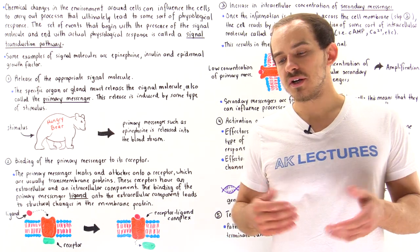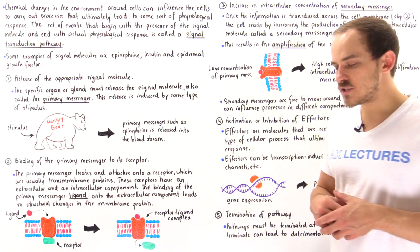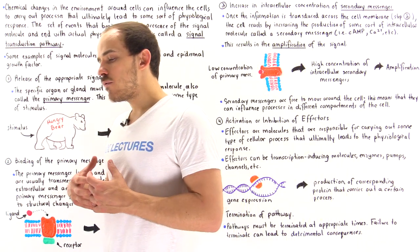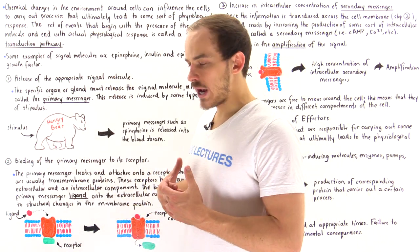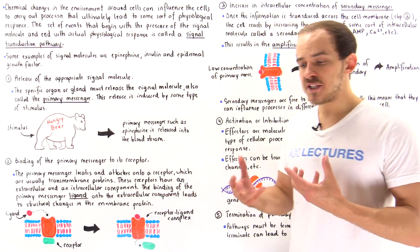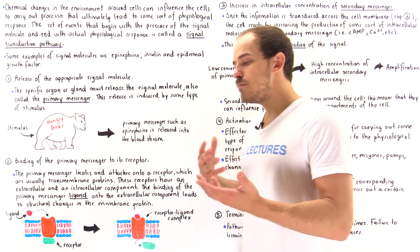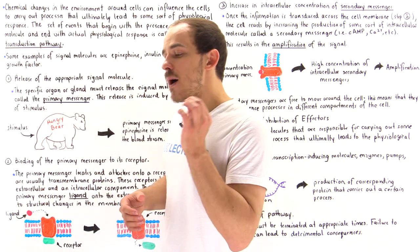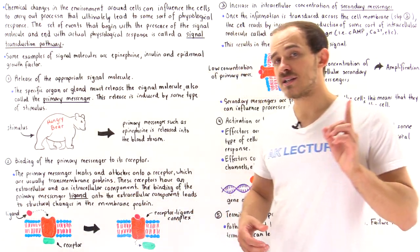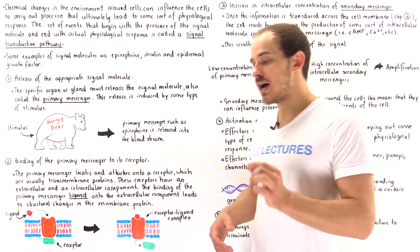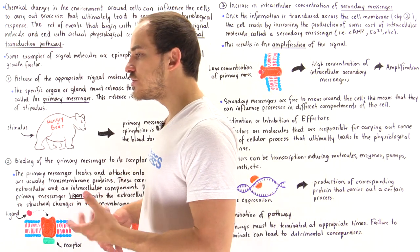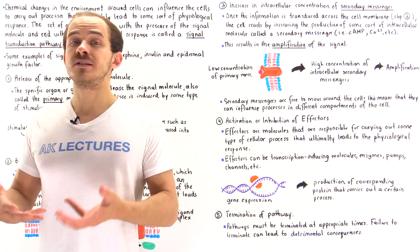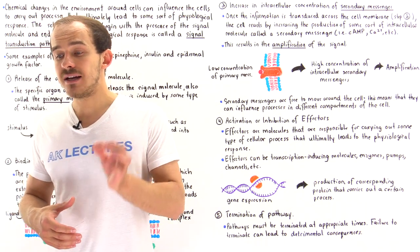Humans are what we call eukaryotic organisms, which means we consist of many many individual cells. For the human to function correctly, the individual cells must be able to work together and communicate with one another, and these individual cells must be able to carry out processes at the correct time. The question is: how does a given cell actually know to carry out a specific set of processes at a given time?